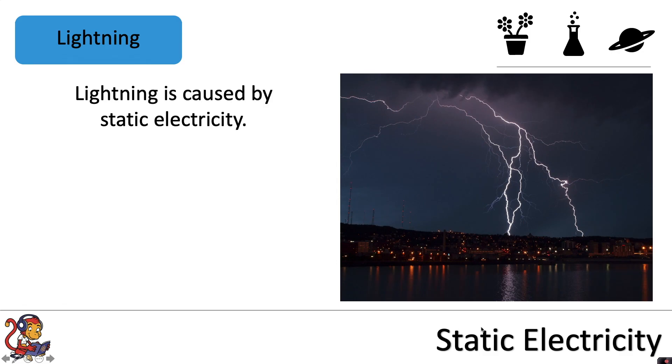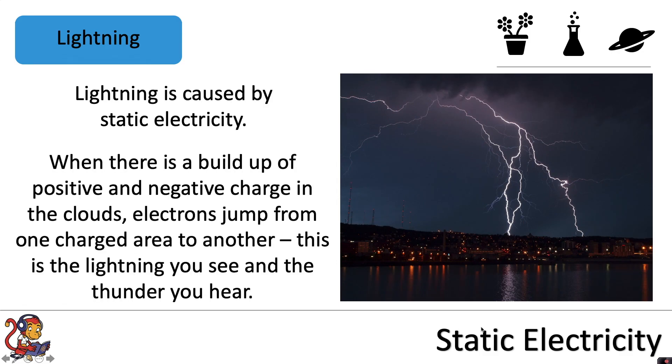Lightning is caused by static electricity. When there is a build-up of positive and negative charge in the clouds, electrons jump from one charged area to another. This is the lightning that you see and the thunder that you hear.